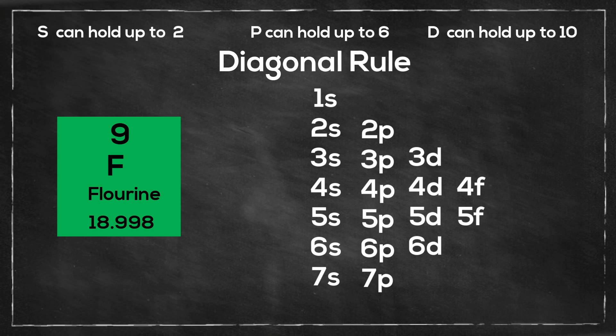The diagonal rule works for almost every element on the periodic table, but there are exceptions and I will have a list of these at the end of the video. So first let's write out the chart.